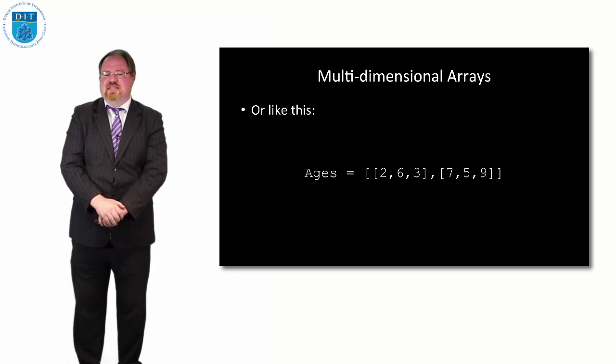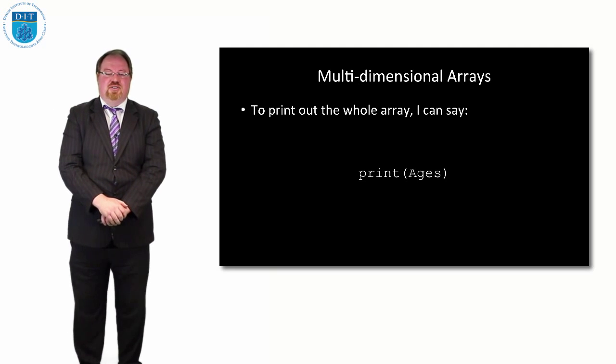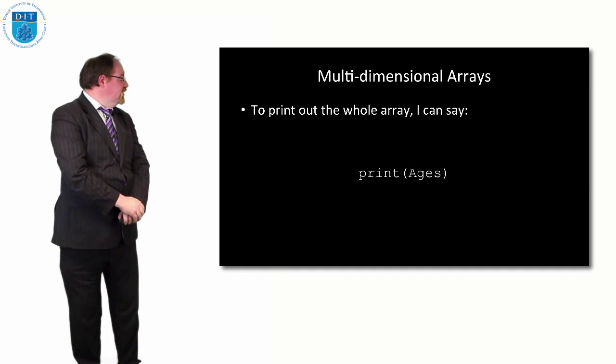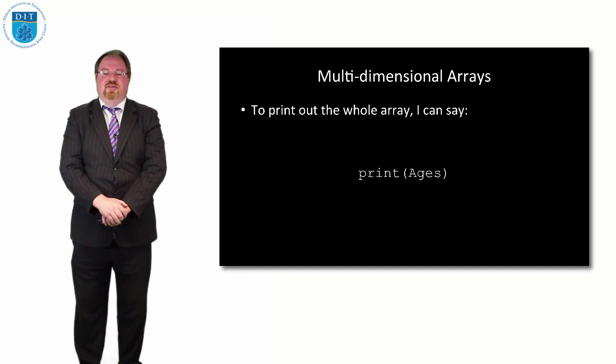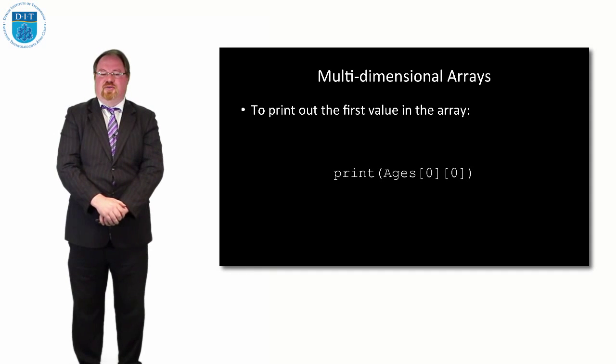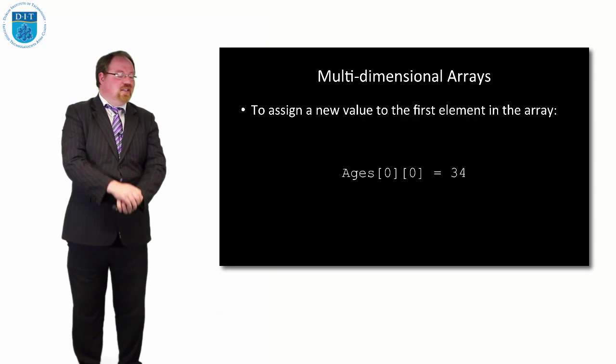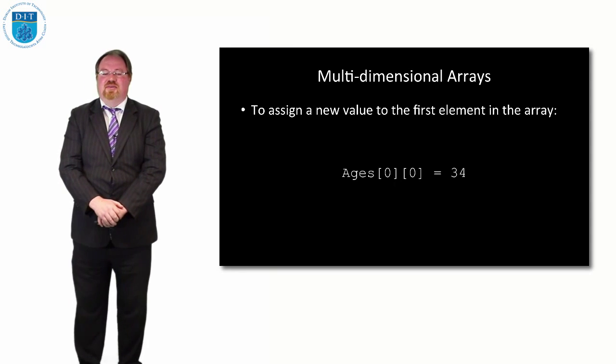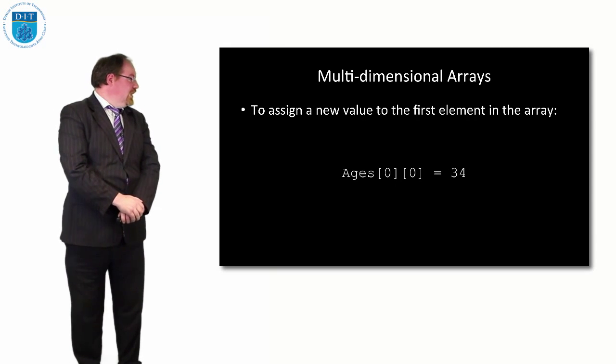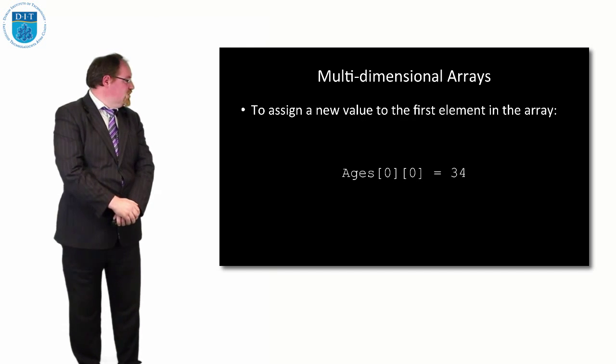If we print out the list, we print out the same as we would before. If we just said print ages, that's what we get. If we want to print out the first value in the array, we just print [0][0]. That will print out whatever value it has. If we want to assign the first element in the array to a new value, we simply say that value is assigned using the equal sign whatever number we want to give it to.